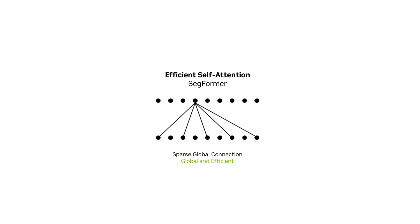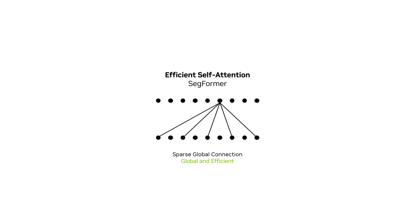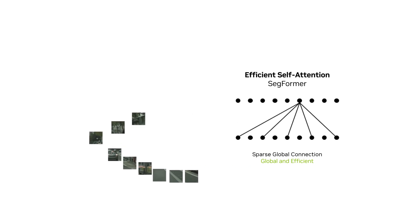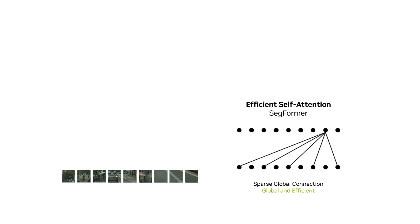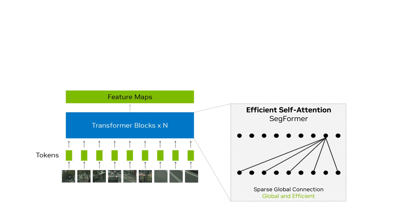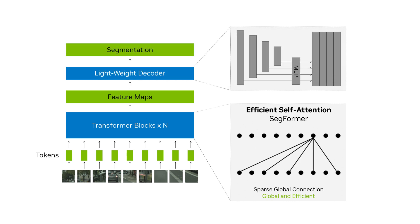Secformer introduces a new efficient self-attention design that achieves both global understanding and high efficiency. The model splits an image into patches, producing multi-resolution features using efficient self-attention. These features are then aggregated through a lightweight decoder to generate the segmentation predictions.